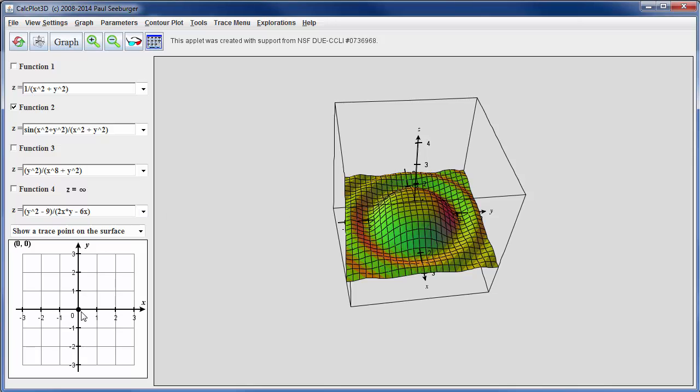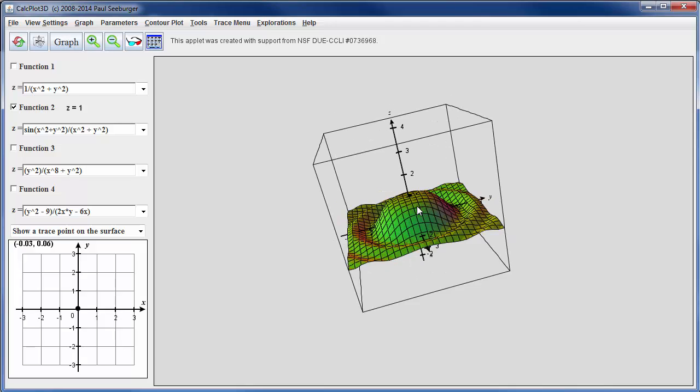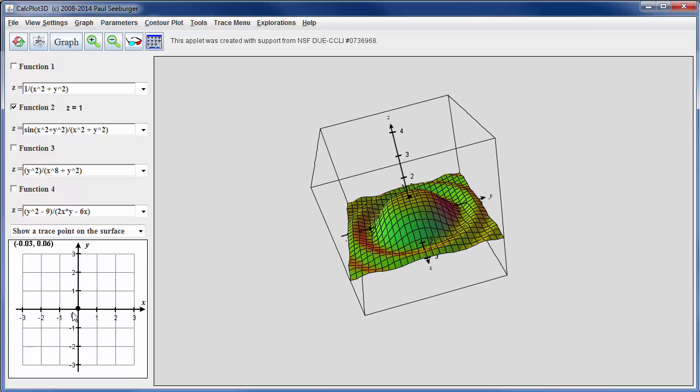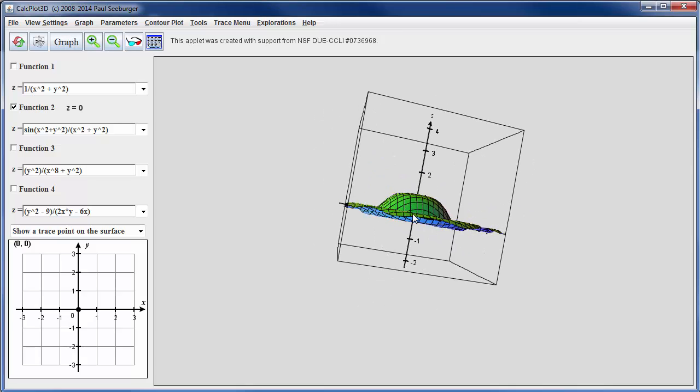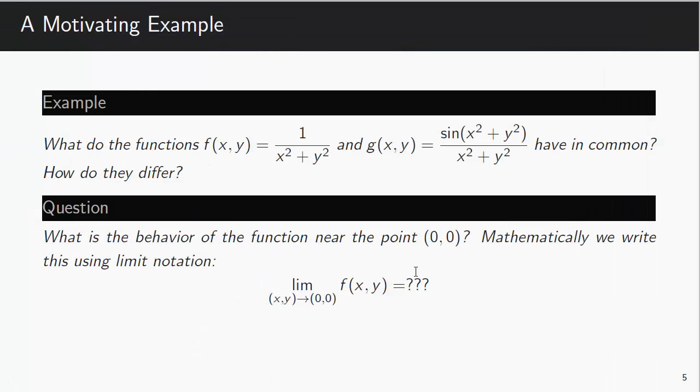If we switch this to the function sine of x squared plus y squared divided by x squared plus y squared, we see something different. So here's the graph. Also kind of an interesting looking function. But in this case, as the point (x,y), so here maybe this is my trace point, as the point (x,y) approaches (0,0), instead of blowing up, I'm approaching what looks to be maybe 1. Here the z value is equal to 1 at the point (0,0). Although technically the function isn't even defined at (0,0).